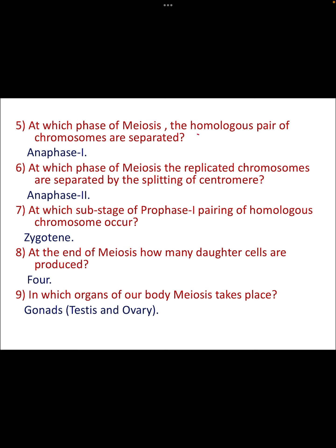At which phase of meiosis are the homologous pairs of chromosomes separated? That is anaphase 1. At which phase of meiosis are the replicated chromosomes separated by the splitting of the centromere? That is anaphase 2. Try to understand the distinction: if it is separation of the homologous pair, that is anaphase 1; if it is separation of replicated chromosomes or splitting of the centromere, that is anaphase 2. At which sub-stage of prophase 1 does pairing of homologous chromosomes happen? That is in the zygotene stage.